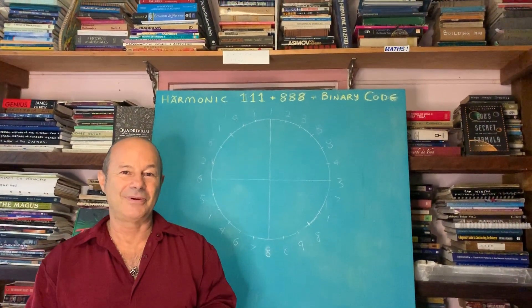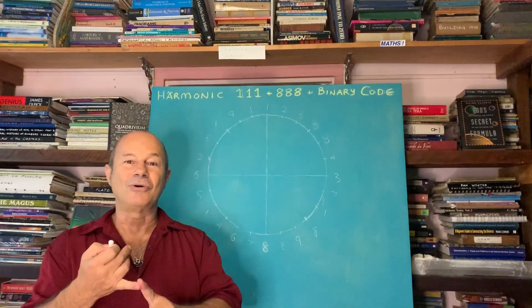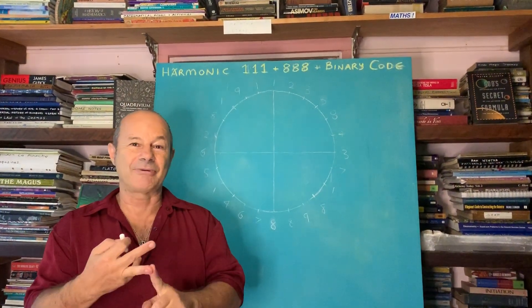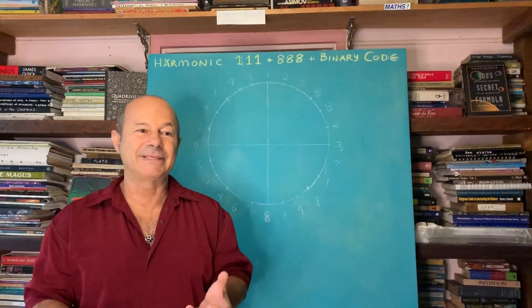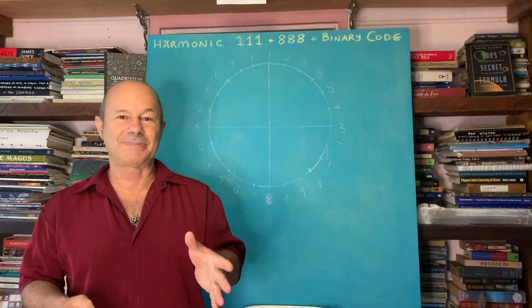I'm excited to share with you an amazing new discovery that connects the Golden Ratio, the Shree number 108, which is the secret pattern inside the Fibonacci sequence, and somehow it's mysteriously connected to what we call the doubling sequence or binary code.